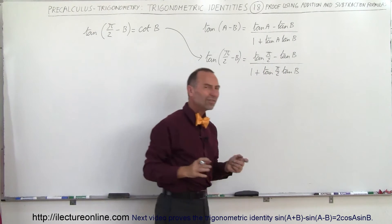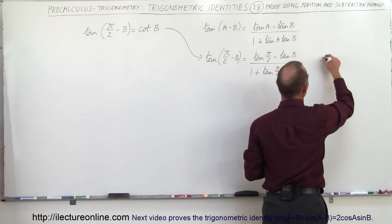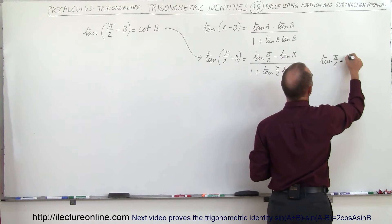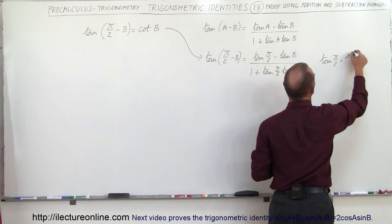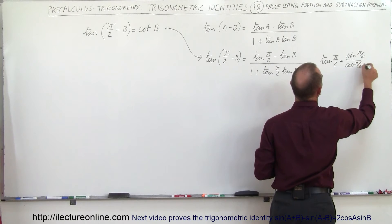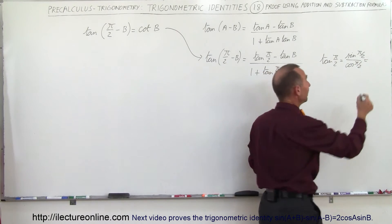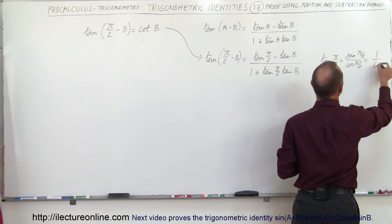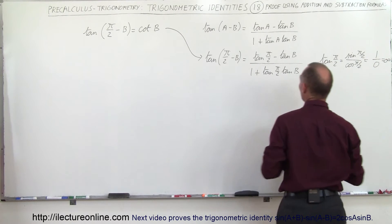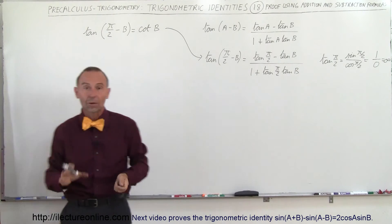Now be careful here. What is the tangent of π/2? The tangent of π/2 is equal to the sine of π/2 divided by the cosine of π/2. The sine of π/2 equals one and the cosine of π/2 equals zero, which means it's undefined. So this way we cannot prove that.